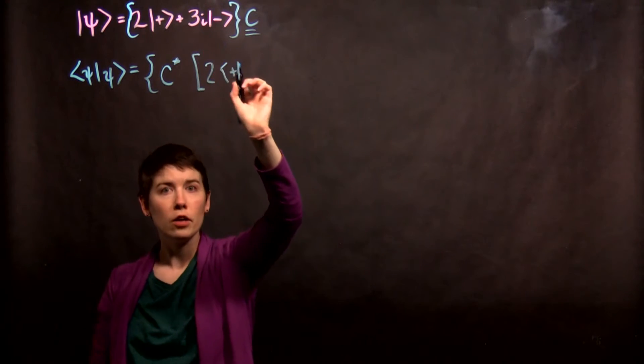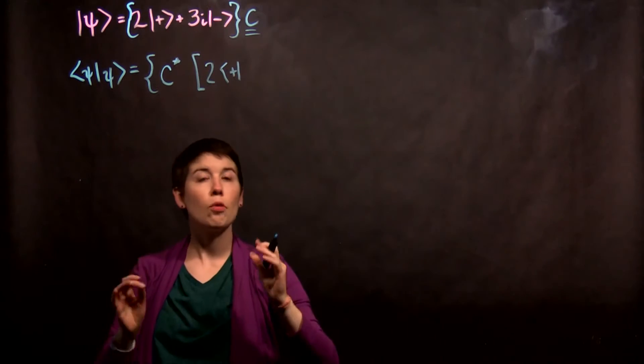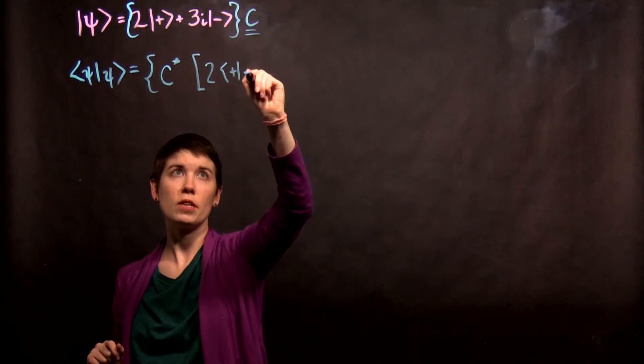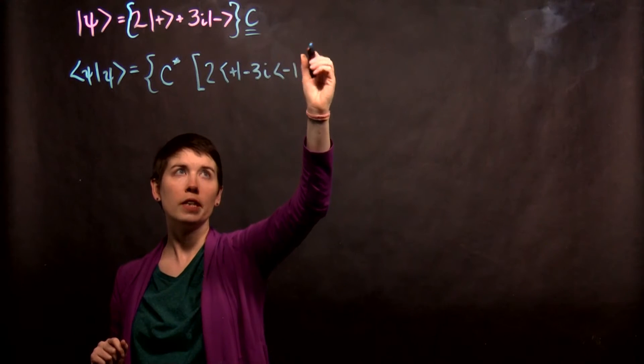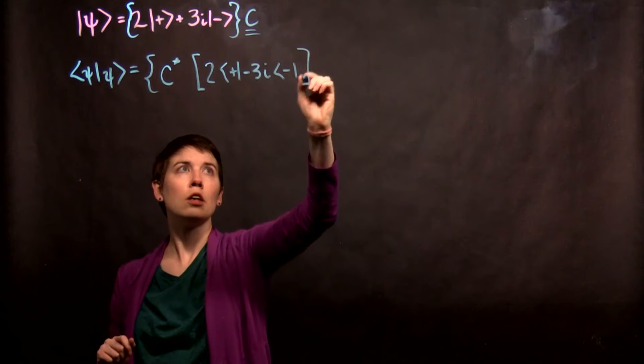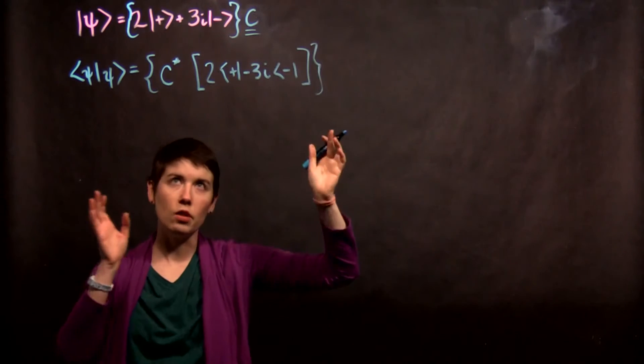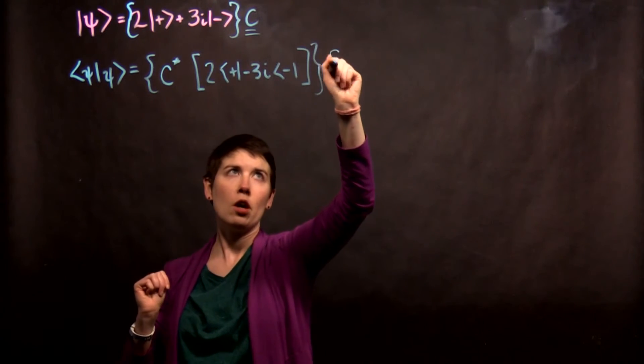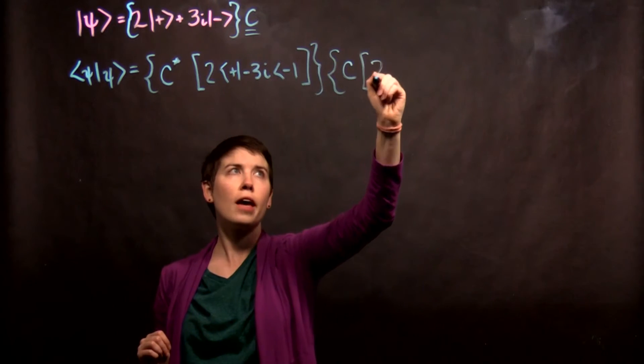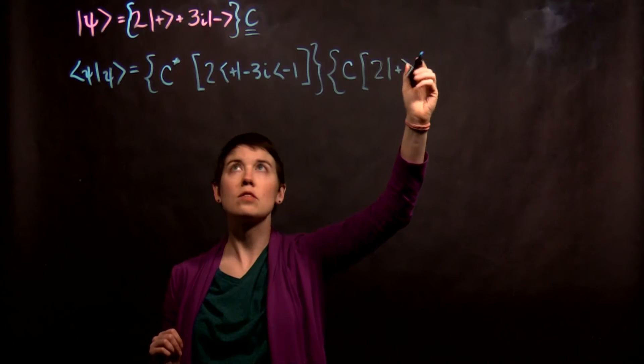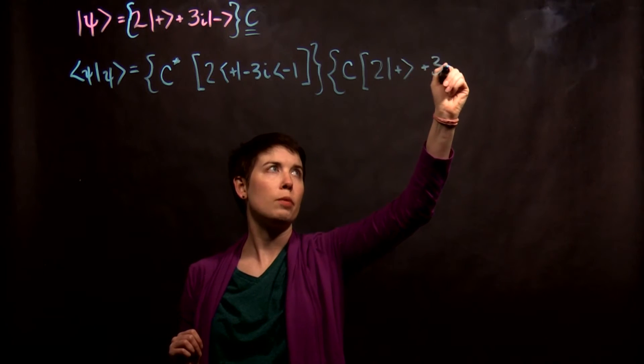And then, now notice here I have 3i. So from going from the ket to the bra, we need that complex conjugate, so that becomes negative 3i. And I have my down bra. And then I use lots and lots of grouping symbols. We again have this coefficient of normalization, and now I have just my original ket state as written above.